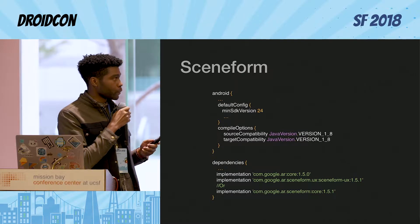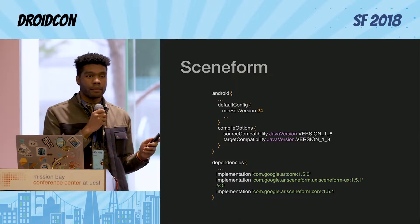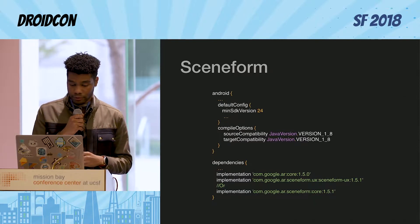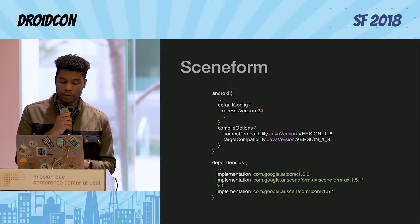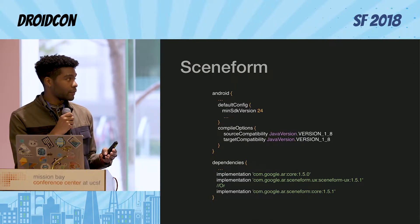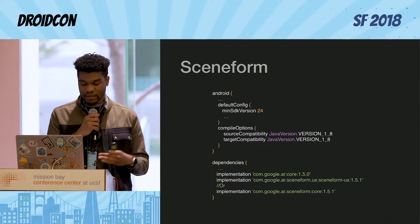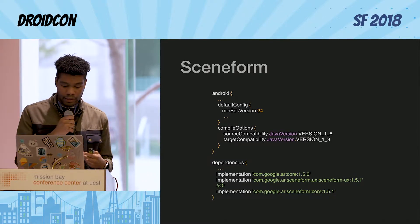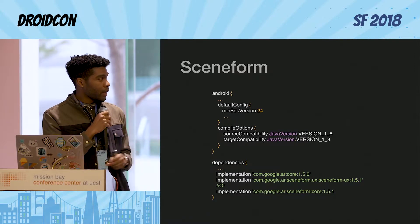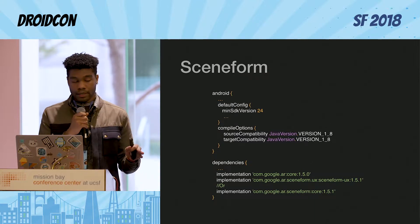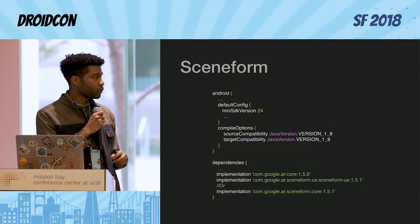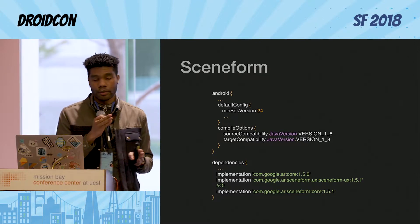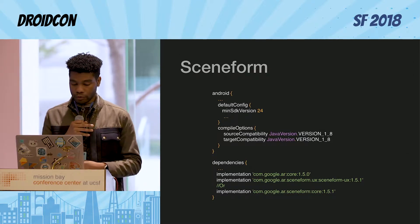Next, you're going to want to add your Sceneform dependency. You're going to need a minimum SDK of 24 — you can't do anything lower. So if your app supports anything lower than that, you might want to check something else. Sceneform does use Java 8 language constructs, so you're going to need to add the source and target compatibility versions of Java 8 to your compile options block. There are two different dependencies you can use for Sceneform: the Sceneform core dependency and the Sceneform UX dependency. The UX dependency is the one that includes the AR scene view and the AR fragment, so that's the one we're going to be focusing on.